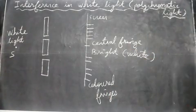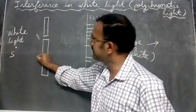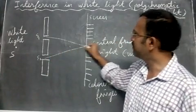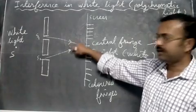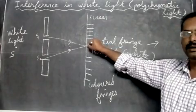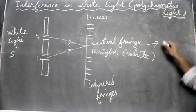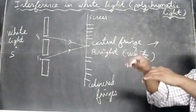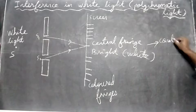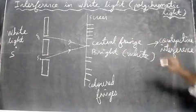Our aim is to understand why the central fringe is white. You see that for the central fringe, light coming from slit S1 and slit S2 travels the same path — the time taken is the same and the path difference is zero. So all the colors fall at the same point simultaneously, join together, and we get a bright white color due to constructive interference.